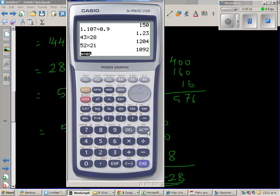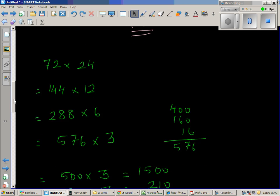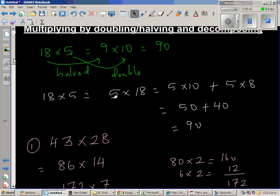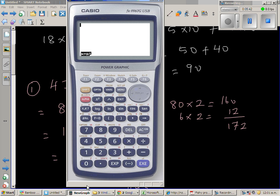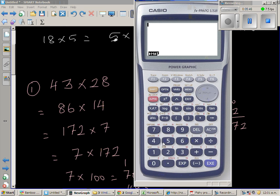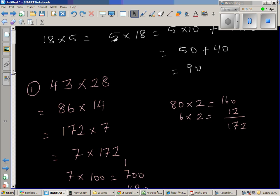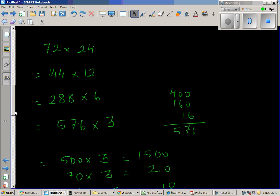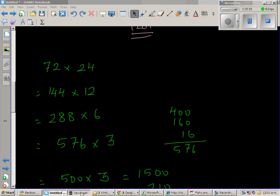Let us use a calculator to check whether we have got it right. The first question was 43 times 28. So let me move the calculator. 43 times 28 is 1204. That was right. And the next question was 72 times 24. 72 times 24 is 1728.